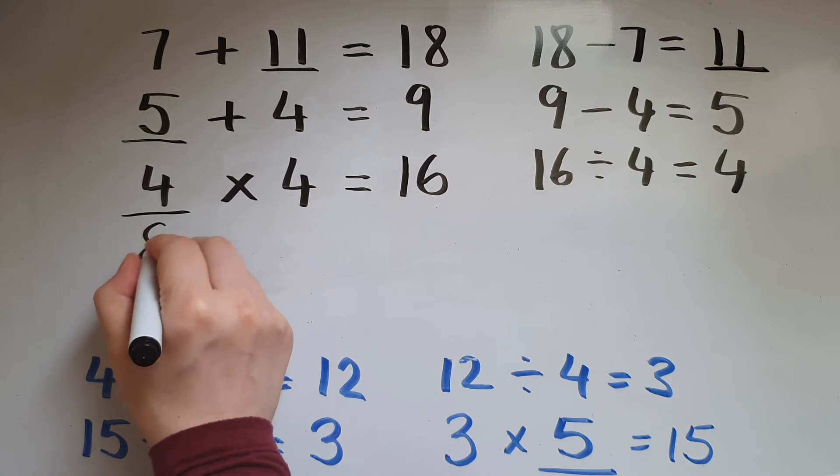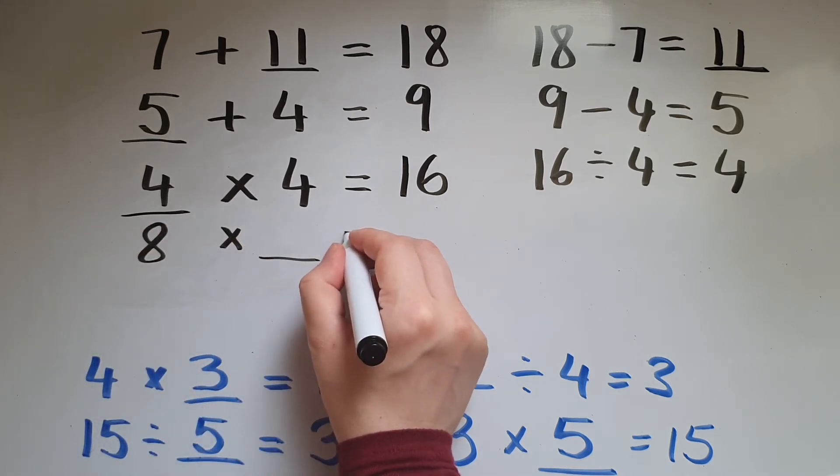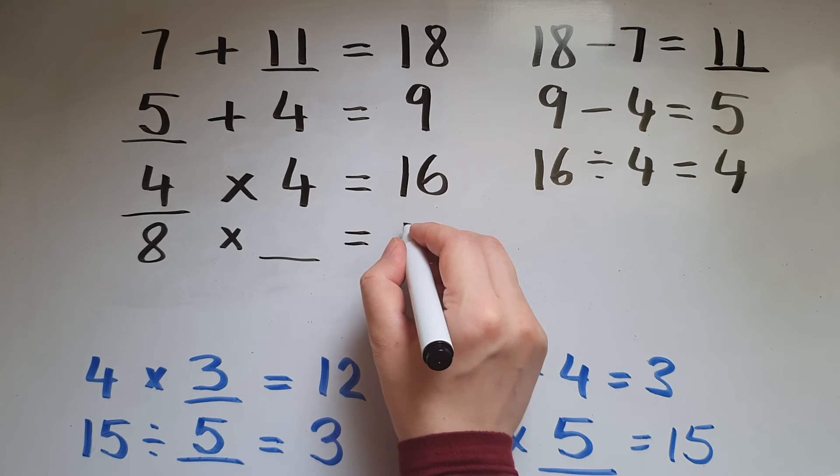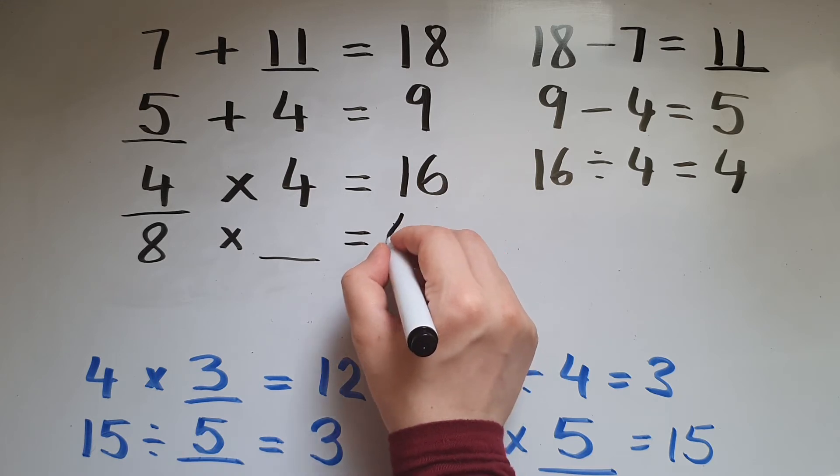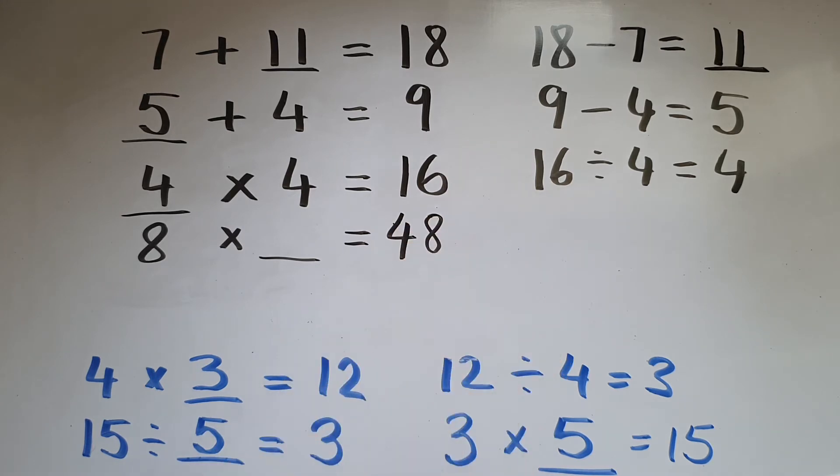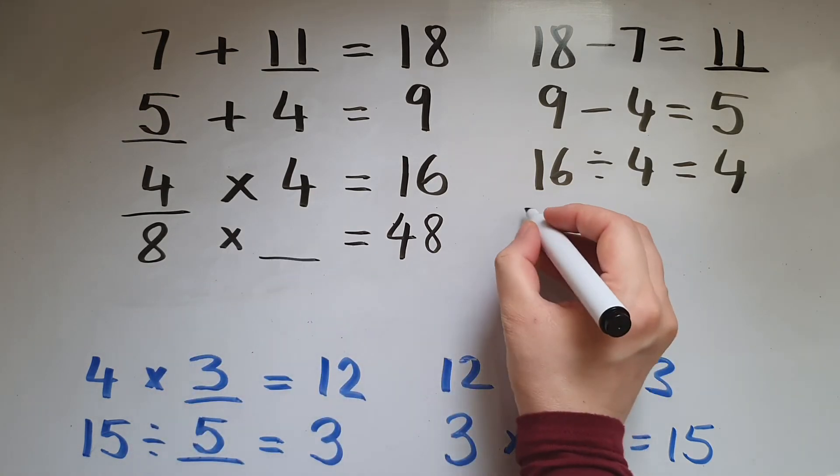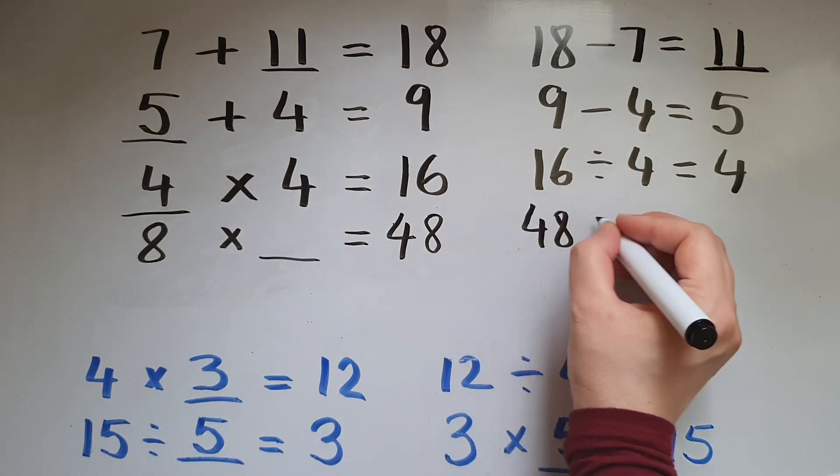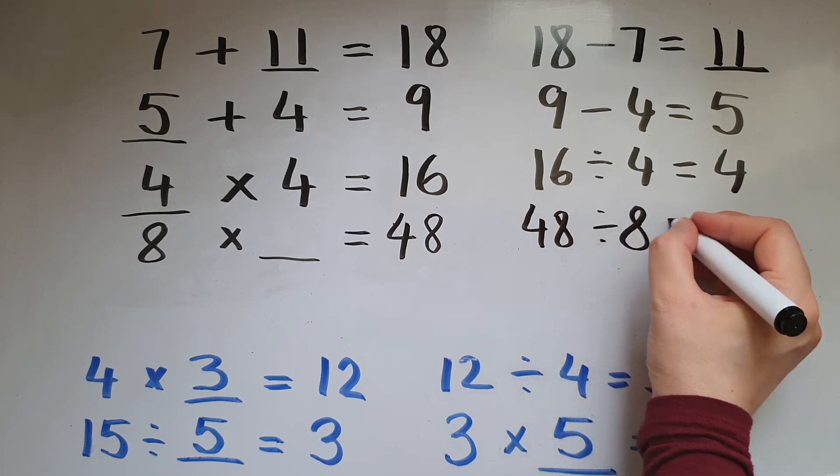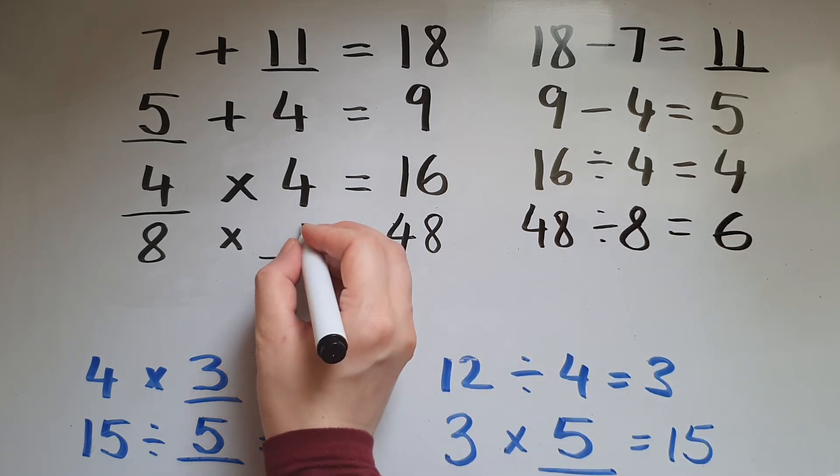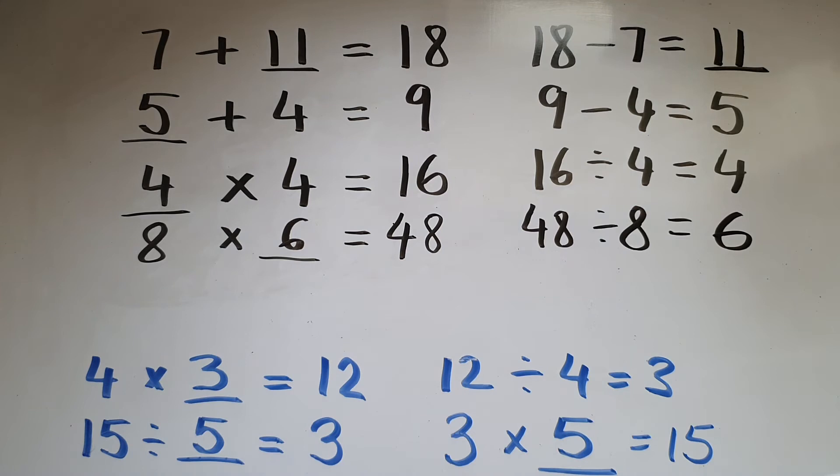8 times a number gives us 48. So 48 divided by 8 equals 6. So 8 times 6 equals 48.